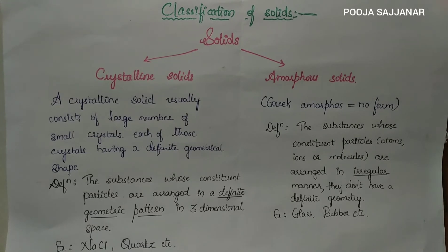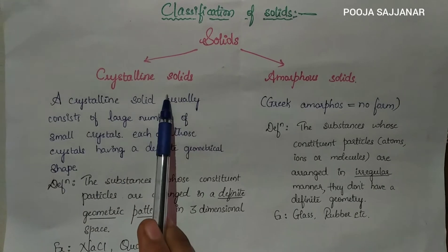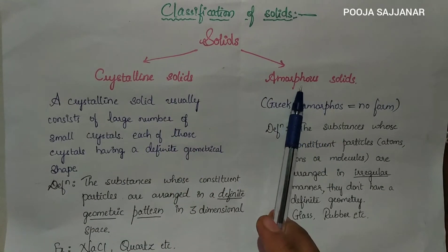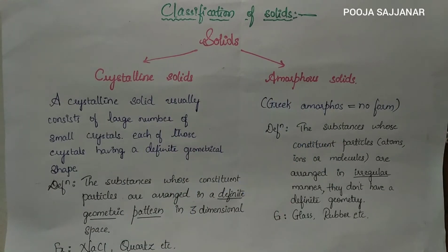On the basis of the nature of order of arrangement of the constituent particles, solids can be classified into two types. The first one is crystalline solids and the second one is amorphous solids. A crystalline solid usually consists of a large number of small crystals.